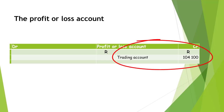In our example, we start the profit or loss account with an entry coming from the trading account. The amount entered on the credit side of the profit or loss account is the gross profit that was transferred when the sales and cost of sales of the business were closed off.